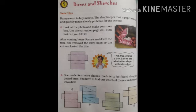Rami went to buy sweets and the shopkeeper took a paper cutout and quickly made a lovely pink box for the sweets. Look at the photo and make your own box. Use the cutout on page number 201. How fast can you fold it? Dear students, many of you also bought sweets like this, and the shopkeeper gives the sweets in this type of box.